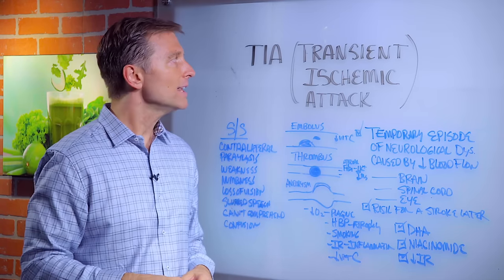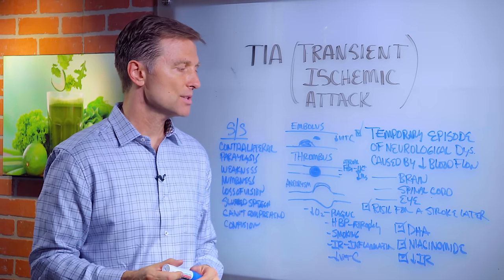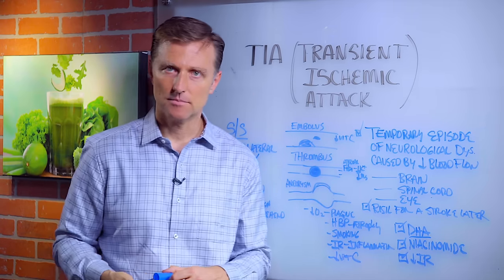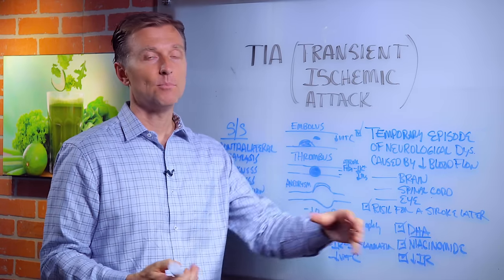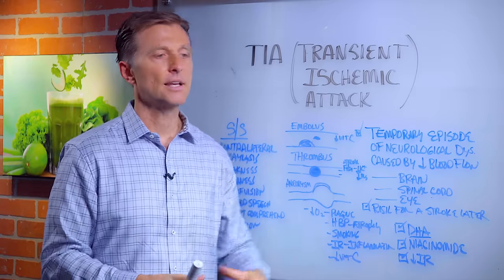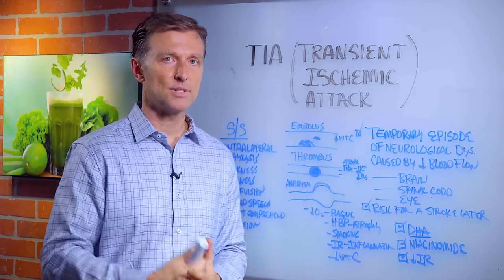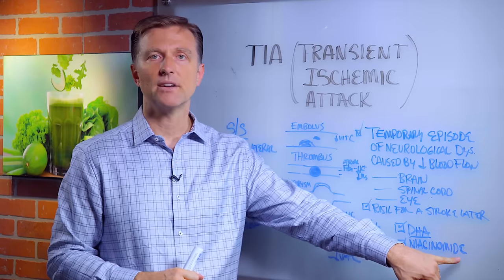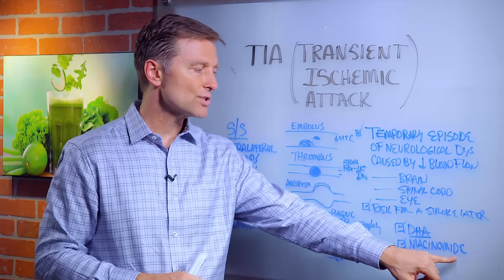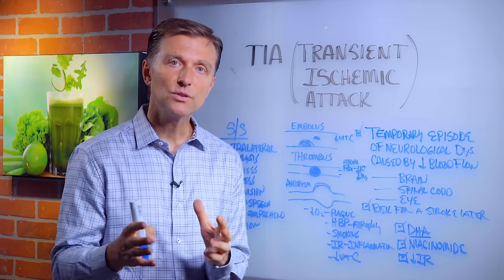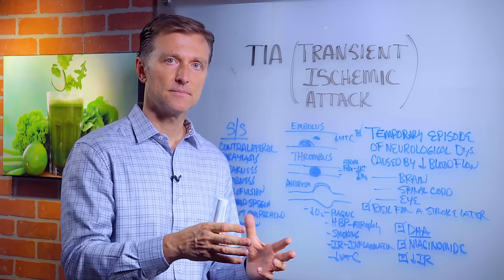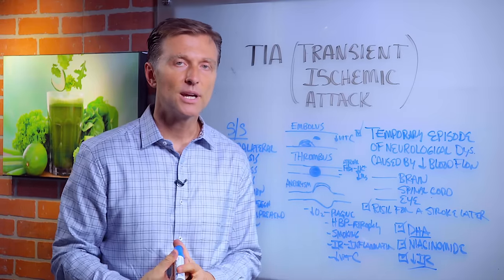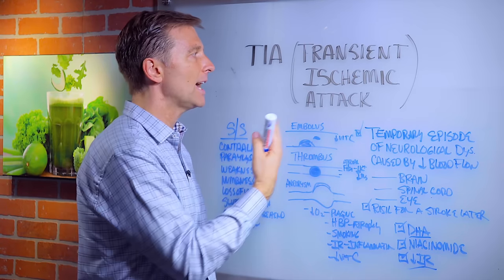If you already have a TIA or stroke, there are some things that are actually helpful. There's a natural healthy fat called DHA — if I had a stroke, I'd be consuming this by the bucketful, because it's been shown to improve brain damage and increases oxygen to the brain. Next is niacinamide, vitamin B3, which has been shown to regrow synapses and regenerate brain cells. And intermittent fasting with keto has been known to increase and regenerate brain cells.